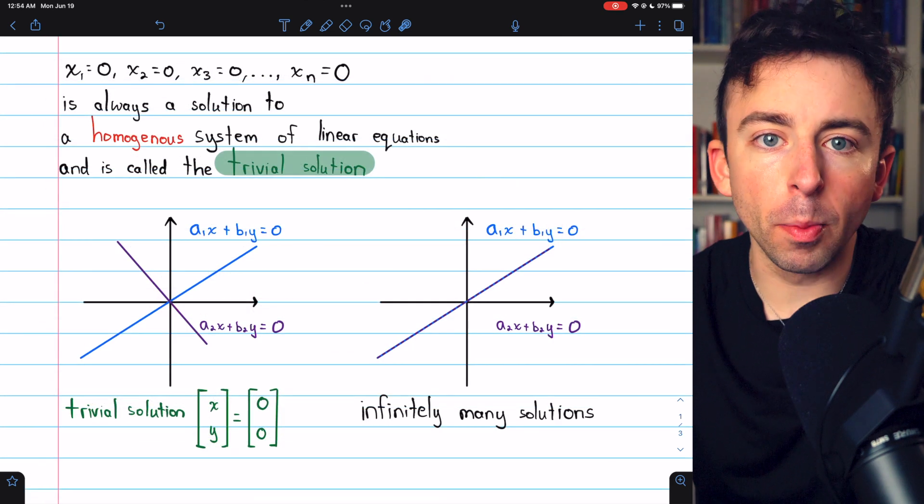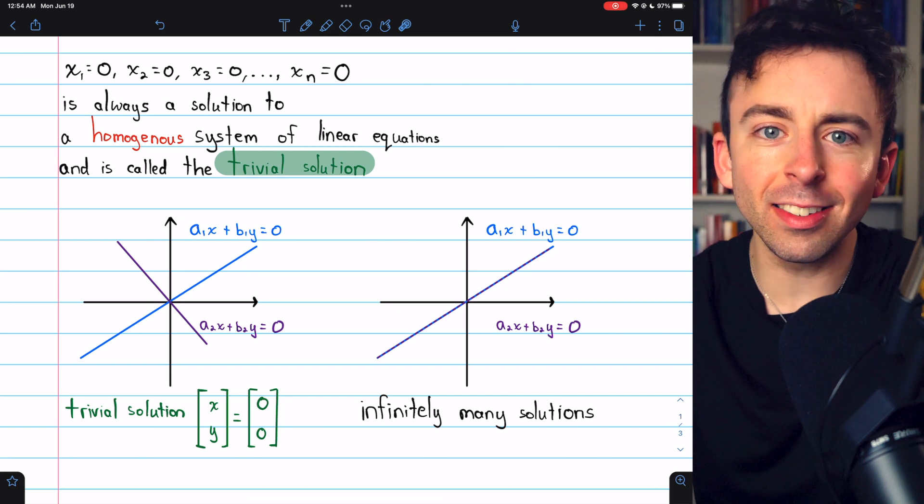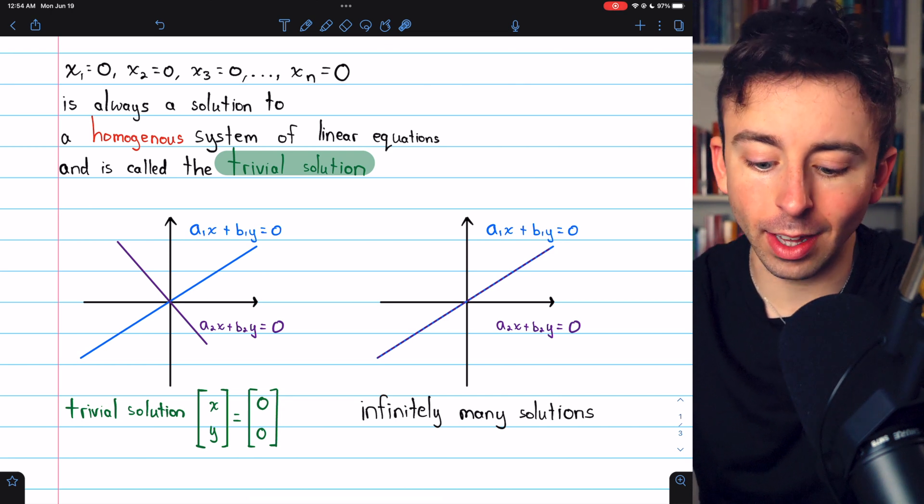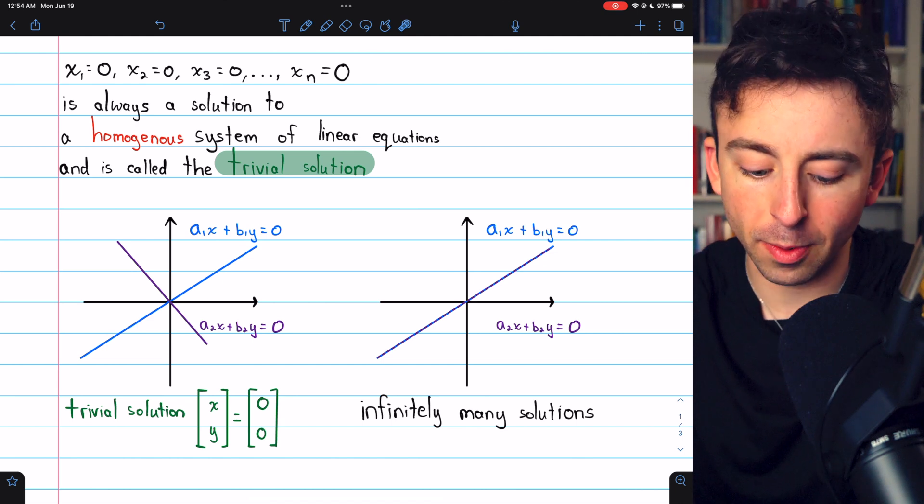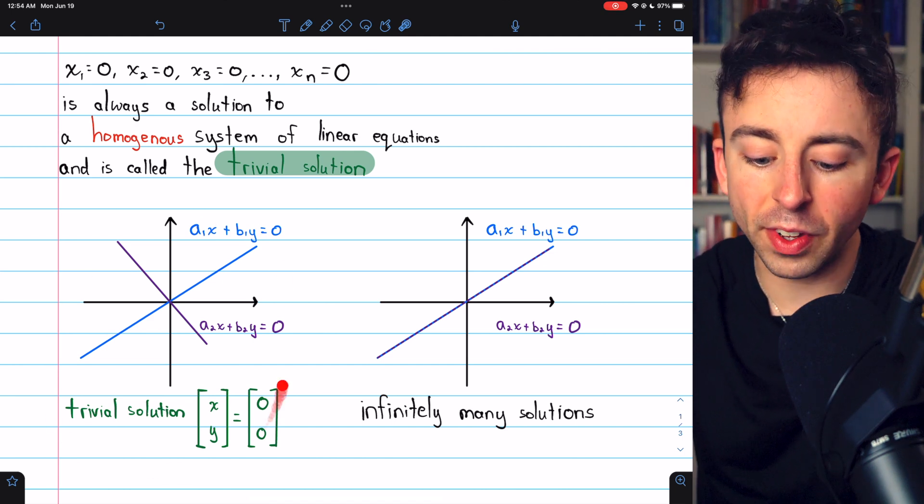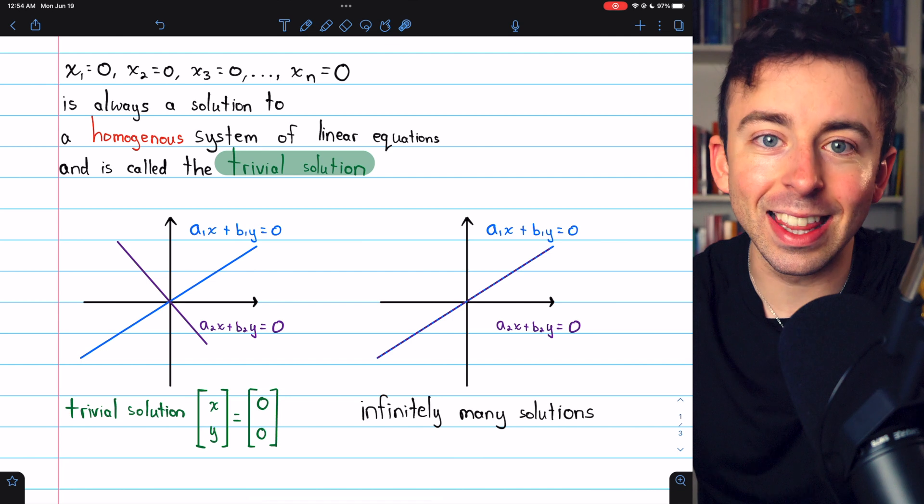The case where our homogeneous linear system has two unknowns is easy to sketch because those are lines. We've got an x and a y, two unknowns, so we're talking about lines. This is what the trivial solution looks like in that case.